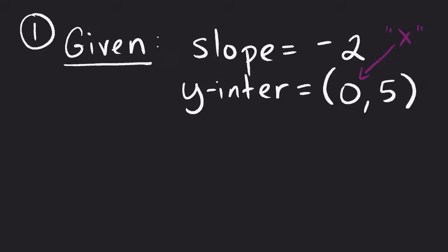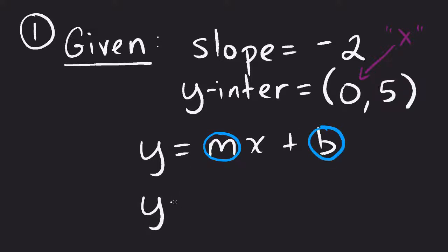What we're doing is plugging into y equals mx plus b. We're plugging in for those two values. So we've got y equals—well, what was our slope? Slope was negative 2.